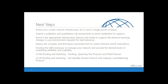What's next? Where do we go from here? Recommended next steps are: first, assess your current network infrastructure looking for single points of failure at both layer two and layer three. Submit a qualitative and quantitative risk assessment to senior leadership to have their buy-in. Invest in the appropriate infrastructure devices and additional media to support the physical topology changes required for fault tolerance. Deploy the concepts and techniques presented here to create redundancy at both layer two Ethernet and layer three IP. Then develop the skills necessary to manage your network and provide the desired levels of availability, reliability, and scalability.